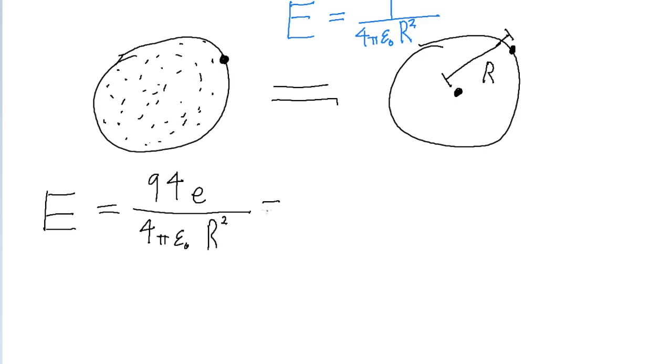Now let's substitute our values. That's 94 times the elementary charge, 1.6 × 10⁻¹⁹ coulombs,